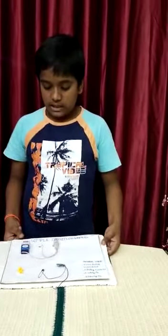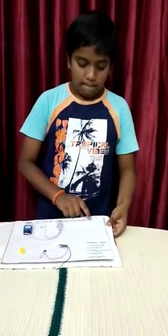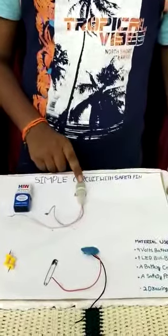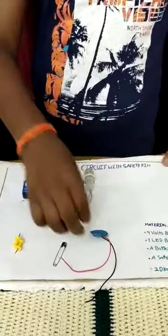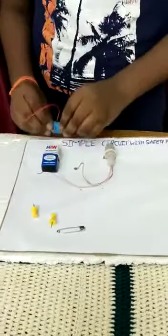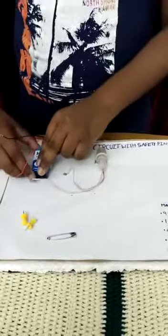Good morning ma'am and all. I have done a project of simple circuit with safety pin. Materials used for this project: a battery, bulb, battery connector, safety pin, two drawing pins. First, connect the battery connector to the battery.